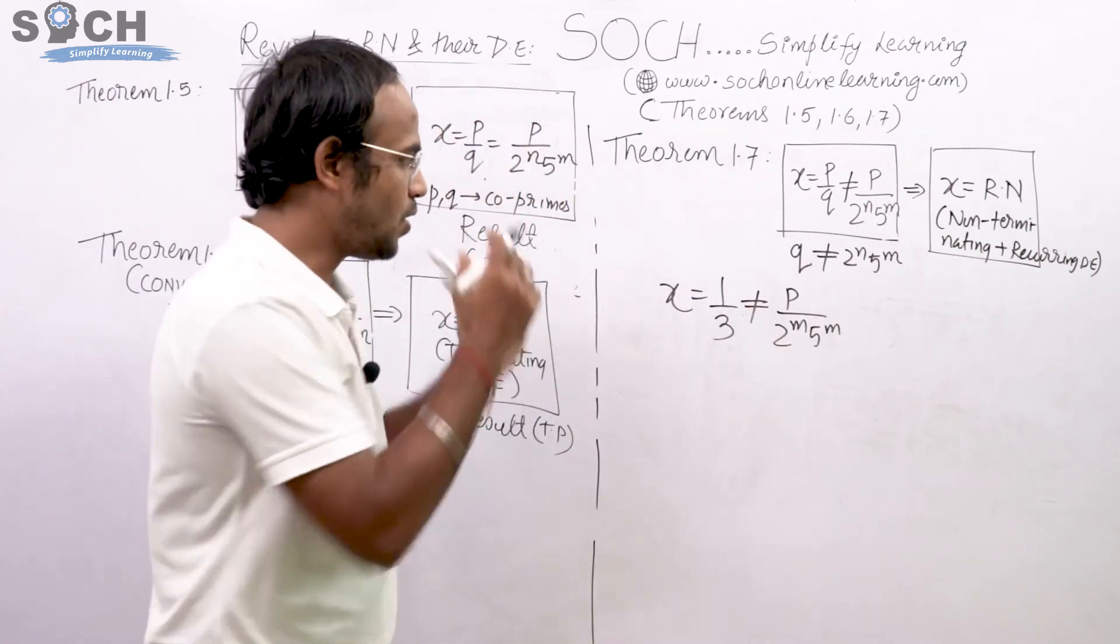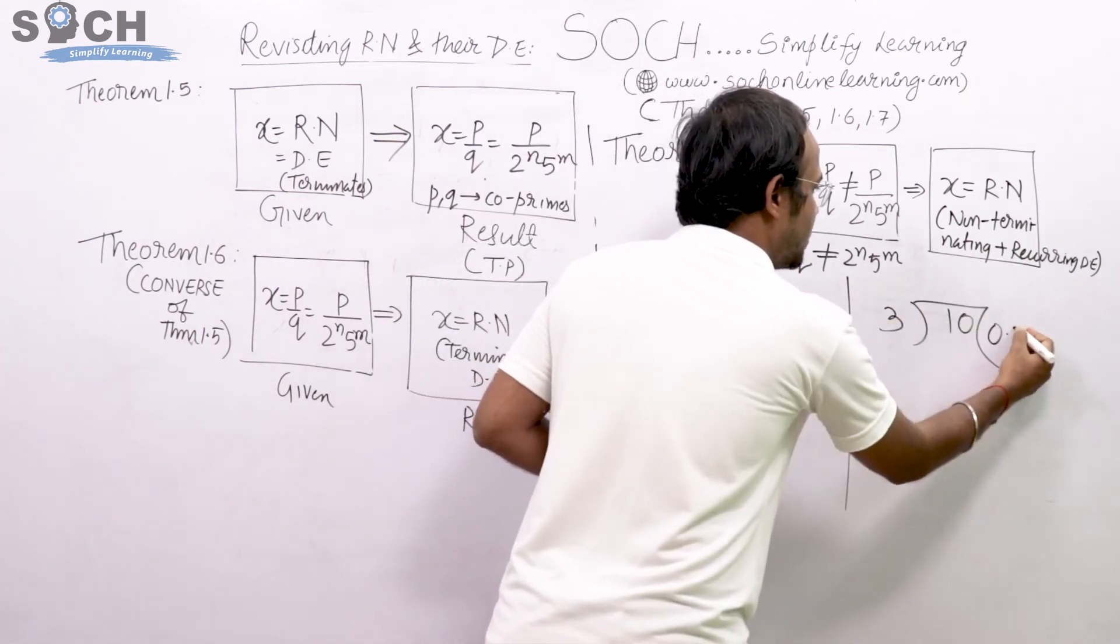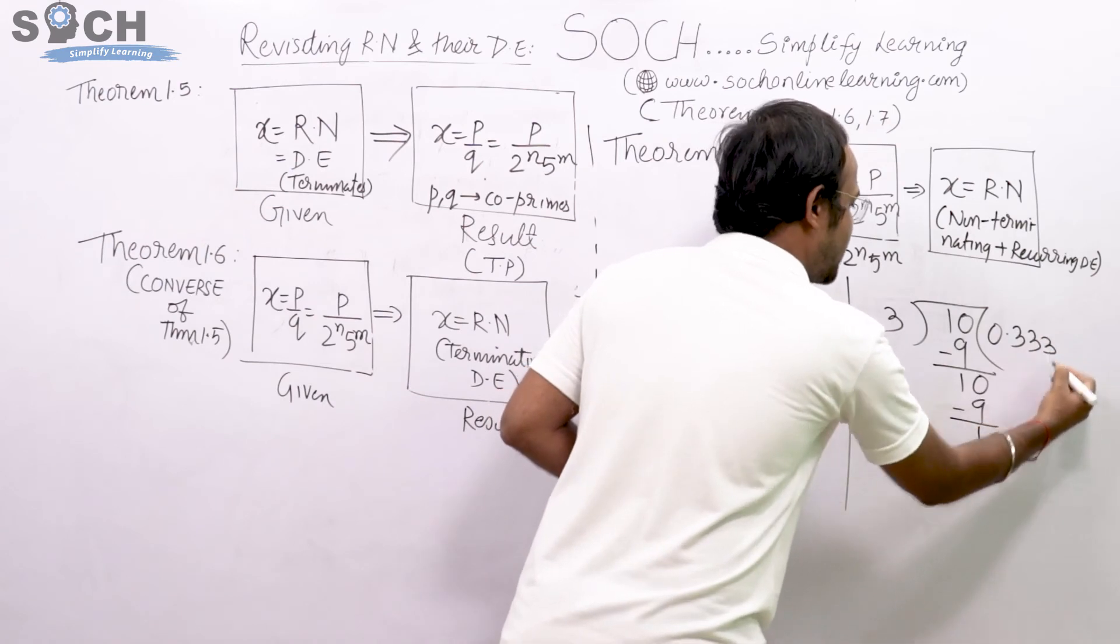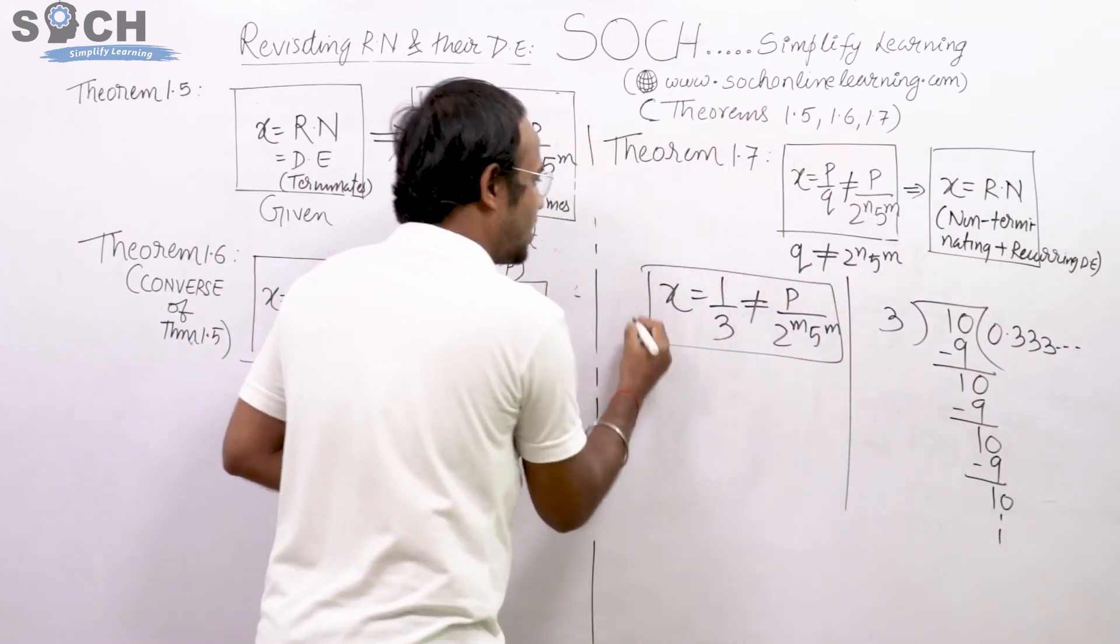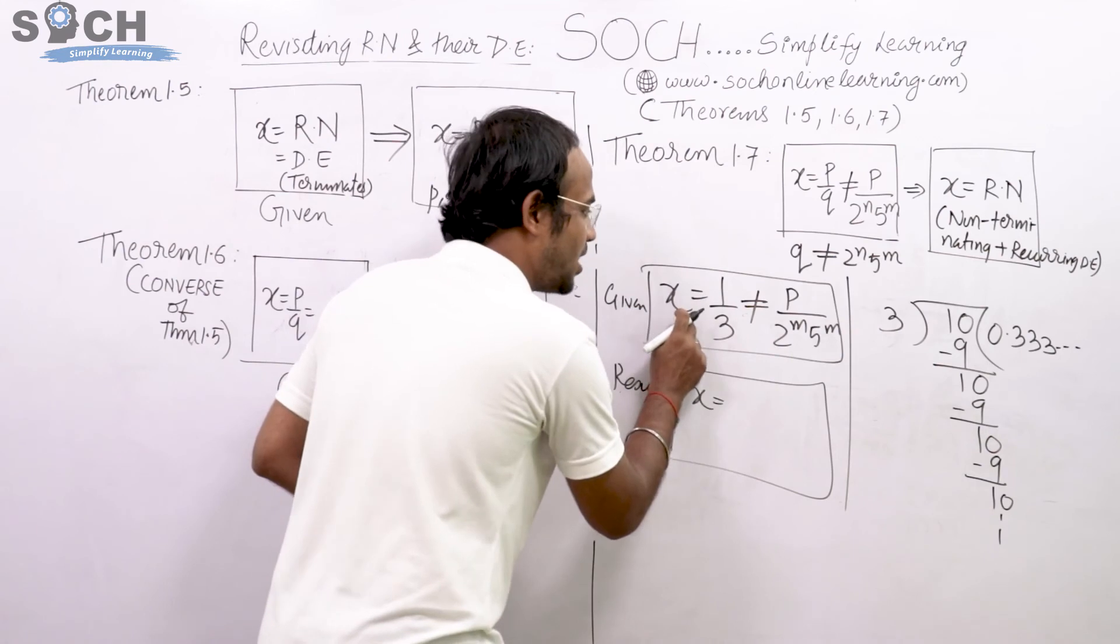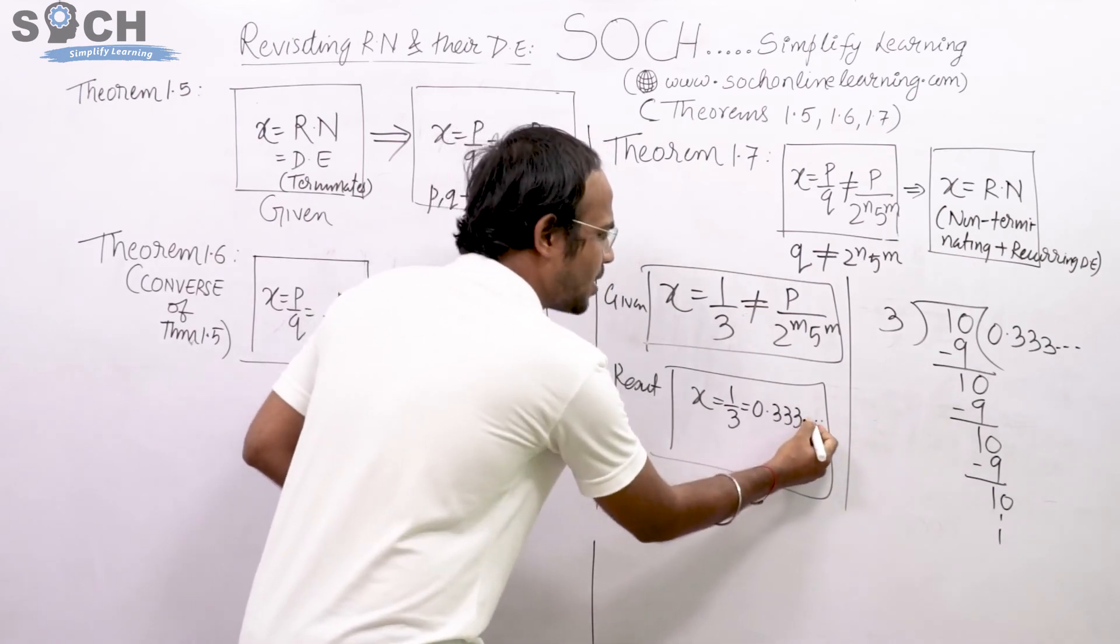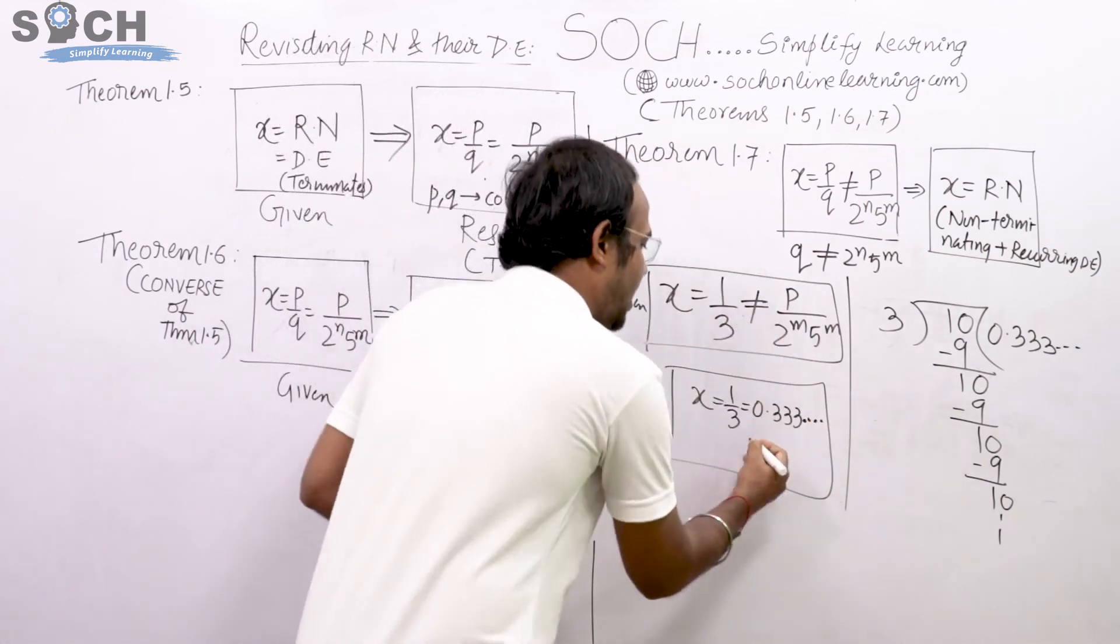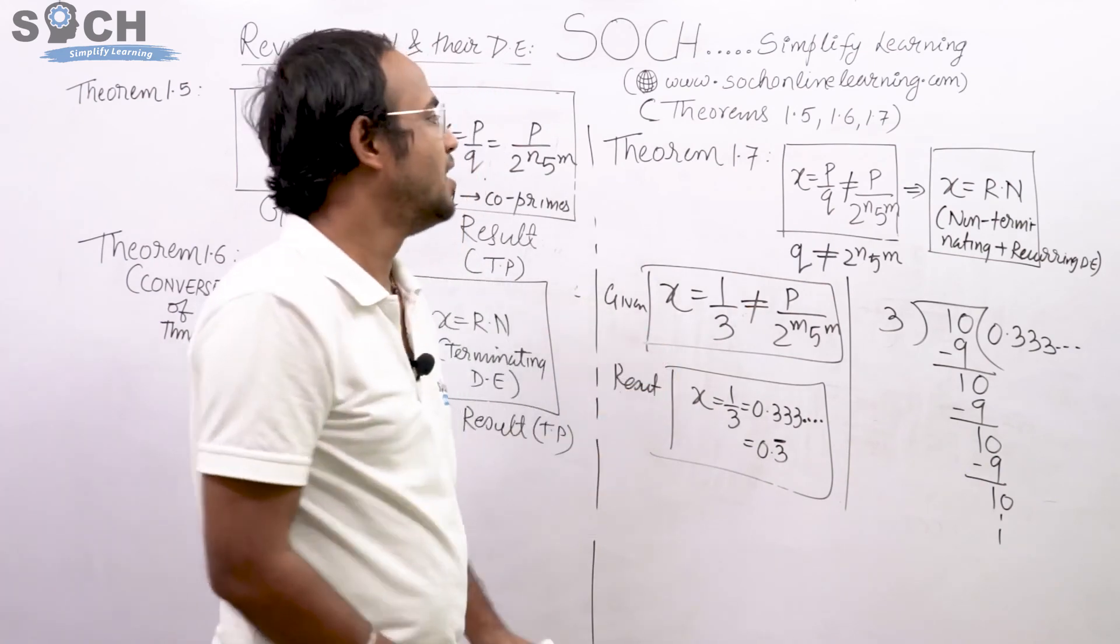X equal to 1 by 3. 3 cannot be expressed in terms of 2 and 5, multiplication of 2 and 5. So therefore it is not of the form P by 2 raised to N and 5 raised to M. Let's look at the division. The division of 1 by 3 is 0.0, 3 threes are 9, then again 1, 0, 3, threes are 9, again 1, 0, 3, threes are 9, and this continues. That means this is what is the first box that is given. And the result box states that X came out to be a rational number whose decimal expansion is dot dot dot, that means non-terminating, never ending, eternally going, and at the same time recurring. Because 0.3 bar bar, bar ka matlab woh bar baar aa raha hai. So this is 0.3 recurring. This is theorem 1.7.